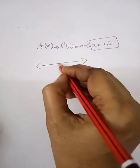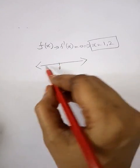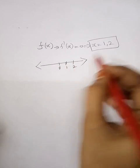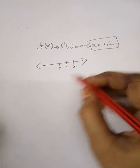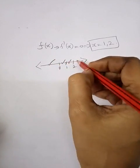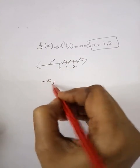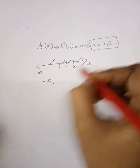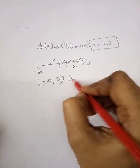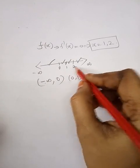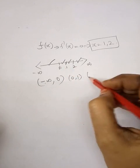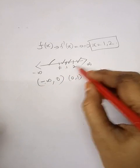On the real line, here is minus infinity on the left, 0 in the middle, and positive values 1 and 2 marked. We denote these critical points and find the intervals. The intervals would be: minus infinity to 0, 0 to 1, 1 to 2, and 2 to infinity — that is 4 intervals.